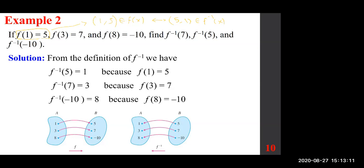The moment you see f(1) = 5, the meaning is the pair (1, 5). For the inverse, that means the pair (5, 1). It's very straightforward.